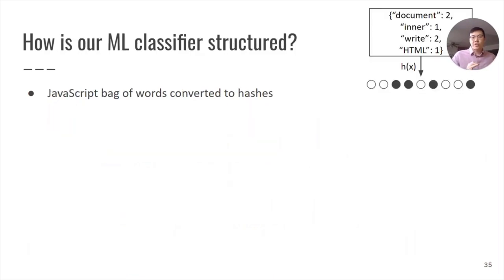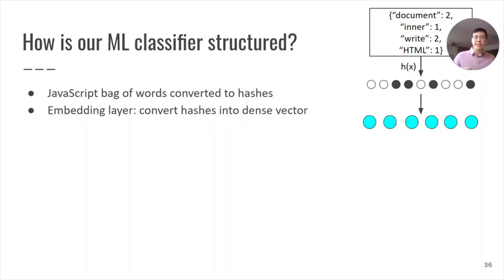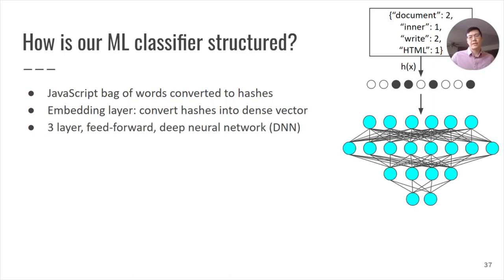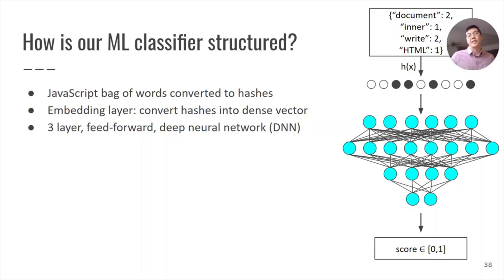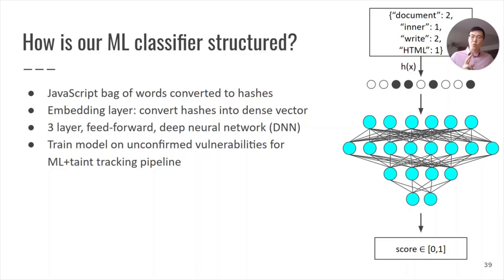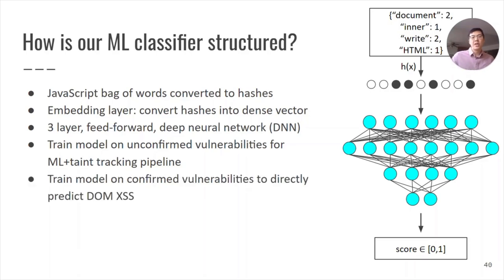Our machine learning classifier is structured as follows. The input JavaScript bag of words is passed through a hash function, which converts them into hashes, which is then passed to an embedding layer that converts the hash values into a dense vector. This dense vector then passes through a three-layer feedforward deep neural network, which produces a 0 to 1 score indicating the likelihood that a DOMXSS vulnerability exists. We perform this process twice: first training on the labels with unconfirmed vulnerabilities, the results of taint tracking, for use in our machine learning plus taint tracking pipeline. And secondly, we train another model using the labels with confirmed vulnerabilities to directly predict whether DOMXSS exists.